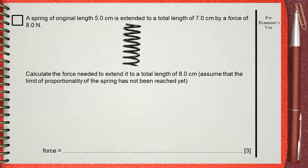A spring of original length 5 centimeters is extended to a total length of 7 centimeters by a force of 8 Newtons. Calculate the force needed to extend it to a total length of 8 centimeters. Assume that the limit of proportionality of the spring has not been reached yet.